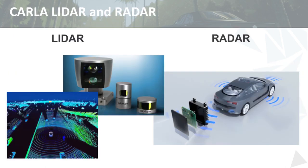LiDAR is a laser ranging technique that uses a spinning laser to develop a regular pattern of range estimates as a 3D point cloud, building a three-dimensional representation of the vehicle's environment. Radar is also used in modern autonomous vehicles — its detections are less regular than LiDAR and it's normally used to estimate ranges to obstacles or vehicles, or in applications like vehicle parking. CARLA provides models of both LiDAR and radar sensors, and for the LiDAR sensor it also provides the semantic ground truth.